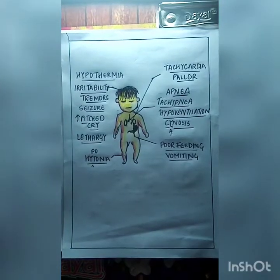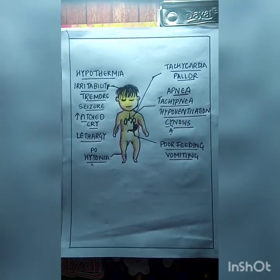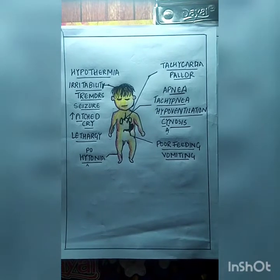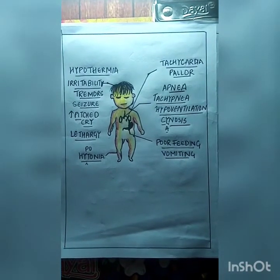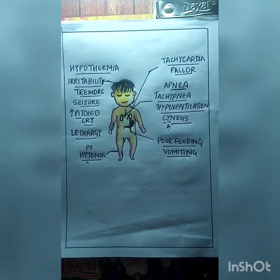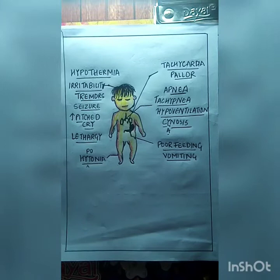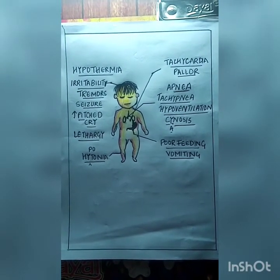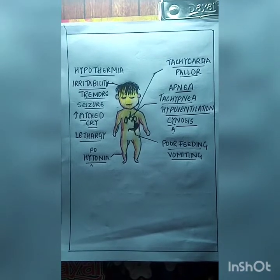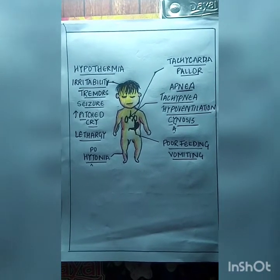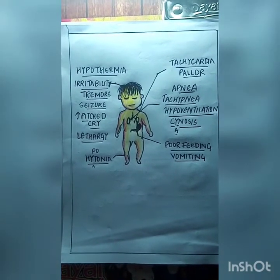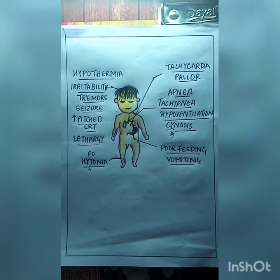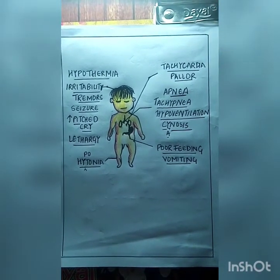The cardinal symptoms of hypoglycemia in infants include: tachycardia, pallor, apnea, tachypnea, hypoventilation, and cyanosis. There will be poor feeding, vomiting, hypotonia, hypothermia, irritability, tremors, seizures, and high-pitched cry. The child will also be lethargic. These are the signs and symptoms of hypoglycemia.